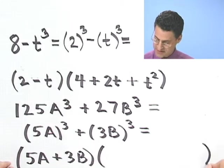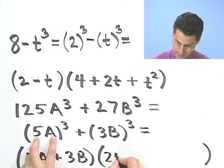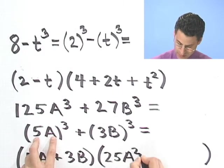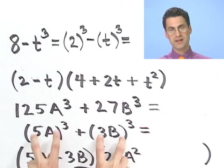And then I'm going to have this thing that starts off with the square of this. That's going to be 25a squared. Then I'm going to have the sum of these things.